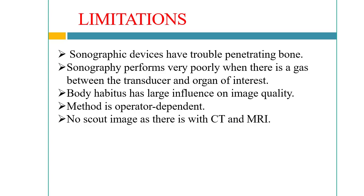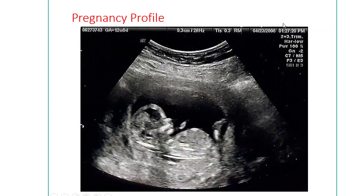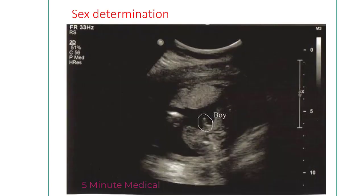Now we will see ultrasonography images of common diseases. This is a pregnancy profile showing a baby; it measures the length of the baby and other pregnancy parameters that can be measured by ultrasonography. This image shows sex determination — here a male sex baby is identified, which can be diagnosed by ultrasonography.